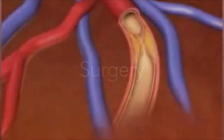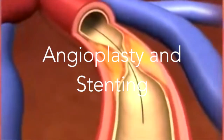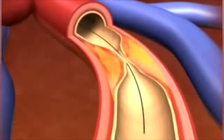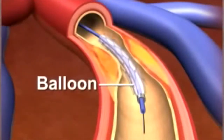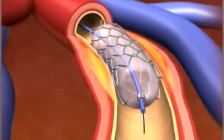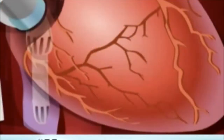A third treatment option is surgery, and it is used to treat more severe forms of angina. Common angina surgery options are angioplasty and stenting, and coronary artery bypass surgery. Angioplasty is a good way to treat chronic stable angina. It is performed by inserting a balloon in a narrowed artery, inflating the balloon to widen the artery, and then reinforcing that area of the artery with a wire mesh coil to keep it widened.